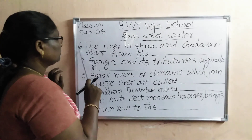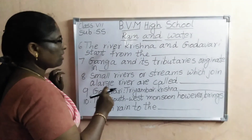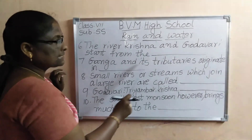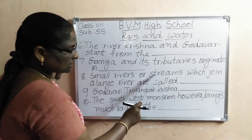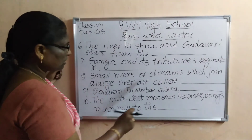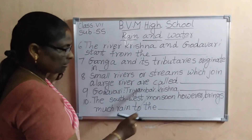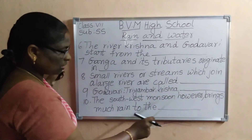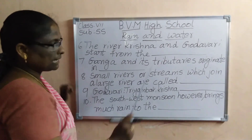Sixth one: the river Krishna and Godavari start from the dash. Ganga and its tributaries originate in dash. Small rivers and streams which join a large river are called dash. Godavari — Trimbak, Krishna — dash. The southwest monsoon however brings much rain to the dash.